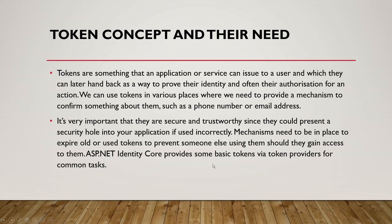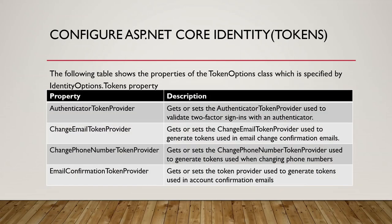ASP.NET Identity also provides some basic tokens via token providers for common tasks. The following table shows the properties of the TokenOptions class, which is specified by IdentityOptions.Tokens. This Tokens property of the IdentityOptions class returns a TokenOptions object. One property is AuthenticatorTokenProvider, which gets or sets the authentication token provider used to validate two-factor sign-ins.